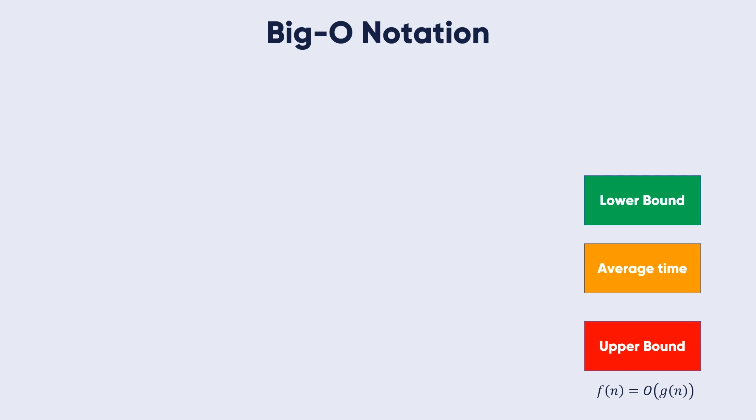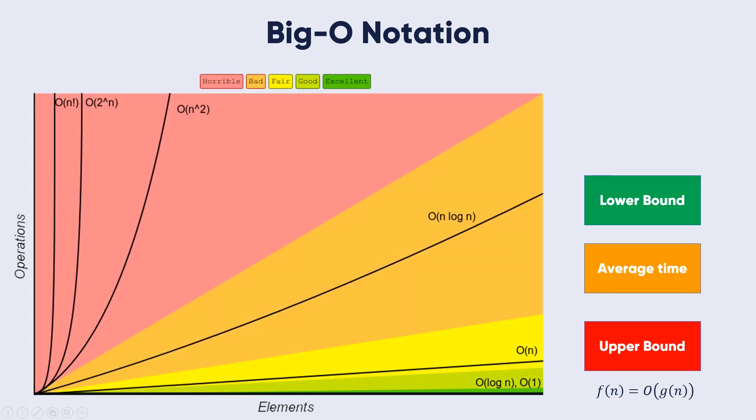This notation gives the tight upper bound of a given function. Generally, it is represented as f(n) = O(g(n)). This means at larger values of n, the upper bound of f(n) is g(n).